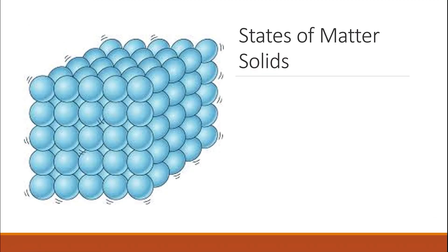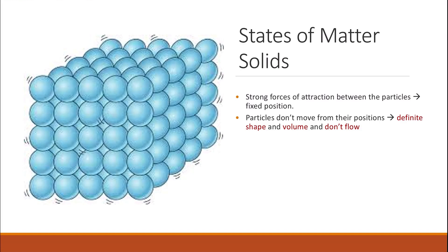The first state of matter is solids. Solids have strong forces of attraction between the particles. The particles are fixed in their position. The particles cannot move from their position because they have fixed positions and they only vibrate. This is why they have definite shape and they have definite volume — they cannot change their shape or their volume.